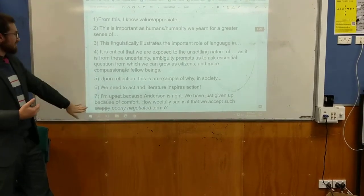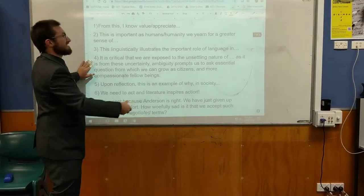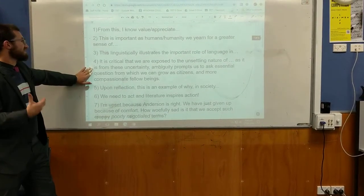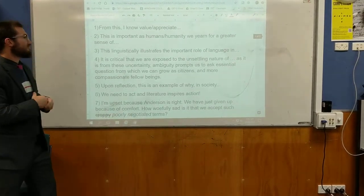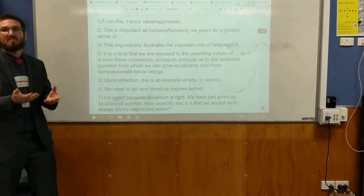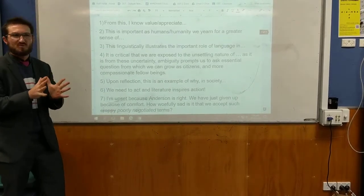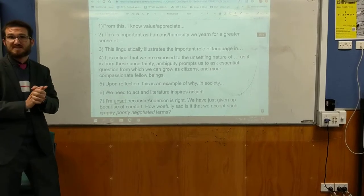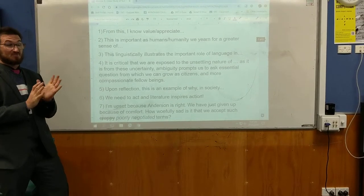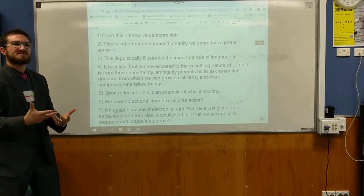The fourth one is a longer, more complex structure: 'It is critical that we are exposed to the unsettling nature of [idea]' — maybe a theme as heavy as death — 'as it is from these uncertainties and ambiguities that prompt us to ask the essential question, from which we can grow as readers, as citizens, and even be more compassionate with our fellow human beings.' One ironic example: facing the death of a dog, or the sorrows in tragedies, can make you reflect on your own life and live with greater confidence, connection, and meaning.